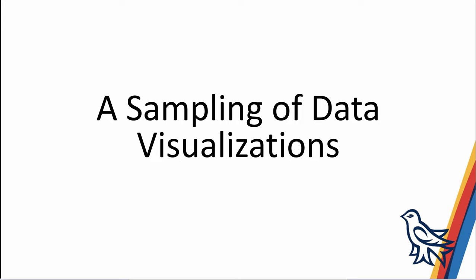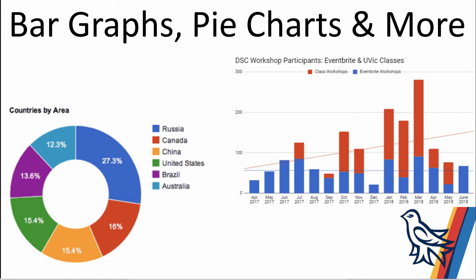I'll quickly review a sampling of visualizations, highlighting the types we have activities and handouts for today. The first ones are bar graphs, pie charts, and more. These are all great ways to visualize fairly simple numerical data, and you'd use tools like Microsoft Excel or Google Sheets to create visualizations like these.